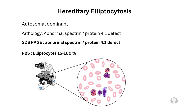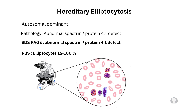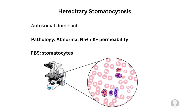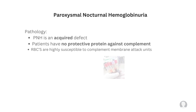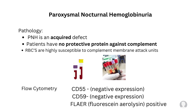Hereditary elliptocytosis shows 15 to 100% elliptocytes on the peripheral blood smear, and protein electrophoresis reveals abnormal spectrin and a protein 4.1 defect. In hereditary stomatocytosis, the pathology is abnormal sodium-potassium permeability and the peripheral blood smear shows many stomatocytes. Paroxysmal nocturnal hemoglobinuria is an acquired defect — not inherited. These patients are missing a protective protein against complement, so their red blood cells are very susceptible to complement membrane attack complexes. Flow cytometry will show negative expression for CD55 and CD59 in a fluorescent aerolysin positive test.